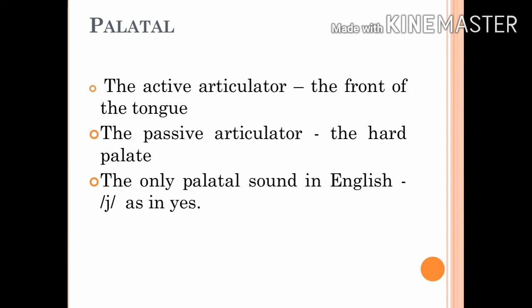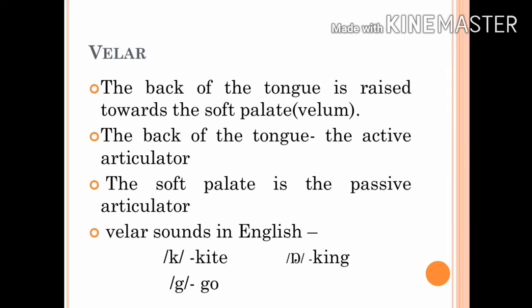Palatal: the front of the tongue is raised towards the hard palate. The active articulator is the front of the tongue and the passive articulator is the hard palate. The sound that begins the English word 'yes' is the one palatal consonant sound that occurs in English. In the production of velar sounds, the back of the tongue is raised towards the soft palate, also called the velum. The back of the tongue is the active articulator and the soft palate is the passive articulator. The sounds K as in 'kite', G as in 'go', and NG as in 'king' are the three velar sounds in English.